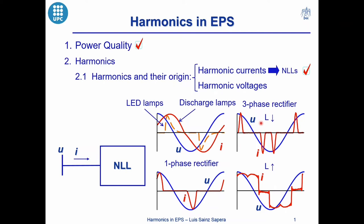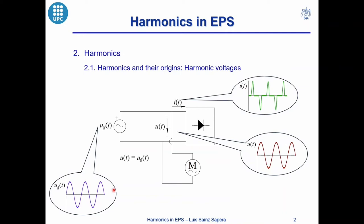To study the origin of harmonic voltages, we can imagine that we have a sinusoidal supply voltage which feeds a nonlinear and a linear load in this circuit. The nonlinear load consumes a periodic but non-sinusoidal current. Nevertheless, the voltage at the load terminals remains sinusoidal, because this voltage is equal to the supply voltage. So, it seems that the harmonic voltages are not produced by the harmonic currents injected by nonlinear loads. This is not exactly true.